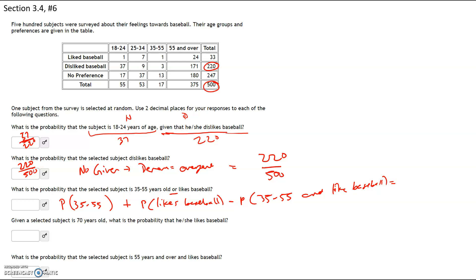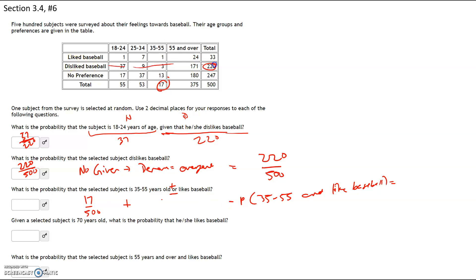So how many people are 35 to 55? We have a total of 17 people who are 35 to 55. So the probability of choosing someone who's 35 to 55 is 17 out of 500. The word 'or' means plus — so plus how many people dislike baseball. If you look at the row that dislikes baseball, we have a total of 220 people out of 500. How did we get to 220? By adding 37, 9, 3, and 171.